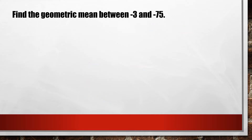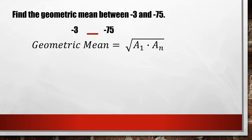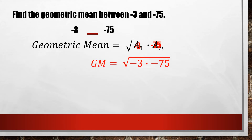Another example: find the geometric mean between negative 3 and negative 75. Again, with these two numbers, we are only asked to look for a single geometric mean. So we will use the same formula — getting the square root of the first term times the last term. Our first term has a value of negative 3, while our last term has a value of negative 75. This gives us the square root of negative 3 times negative 75, and getting the product, we will have the square root of 225.